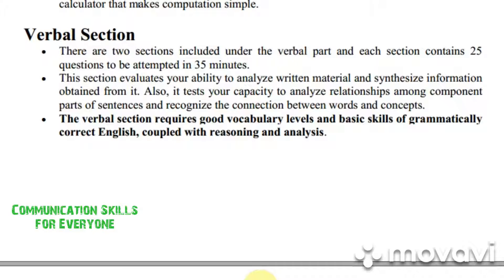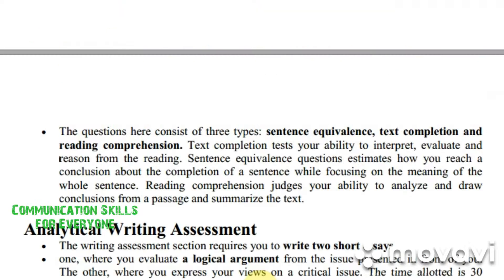The verbal section requires good vocabulary and basic skills in grammatically correct English, coupled with reasoning and analysis. Questions consist of three types: sentence equivalence, text completion, and reading comprehension. Text completion tests the candidate's ability to interpret, evaluate, and reason from a reading passage. Sentence equivalence questions estimate how you reach a conclusion about the completion of a sentence.